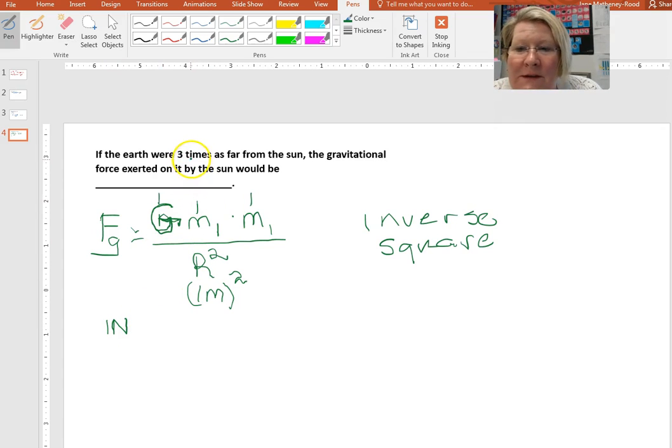But this problem now says that we are three times as far from the sun. So we're three times as far, so we just put the three in there and we square it.